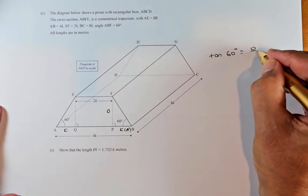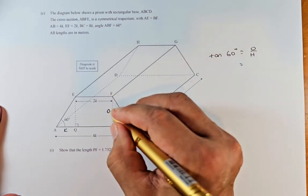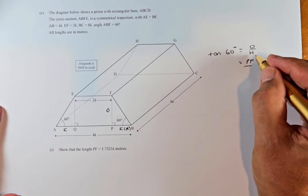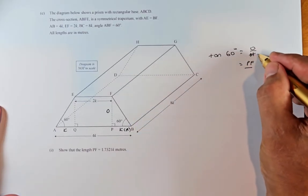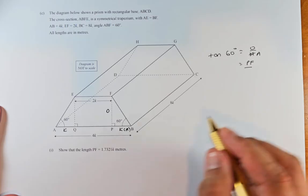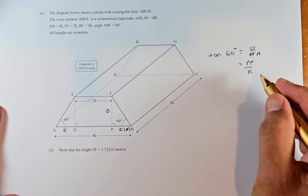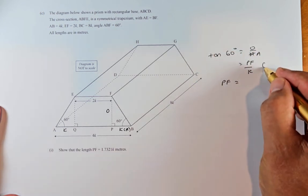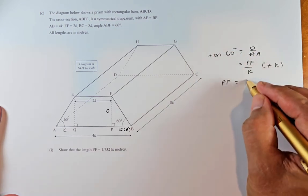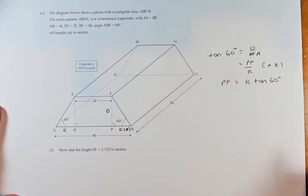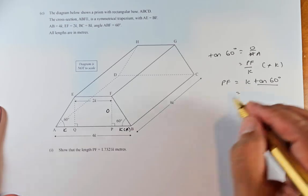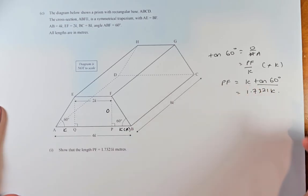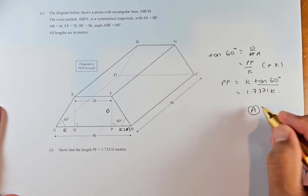Tangent 60 is equal to opposite over adjacent. The opposite is going to be PF, that's what we're going to find, and the adjacent is going to be k. So PF is just going to be k tangent 60. Put it in your calculator, it should get tangent 60 is going to be 1.7321 and then it's times k. So that's how you get achieved.